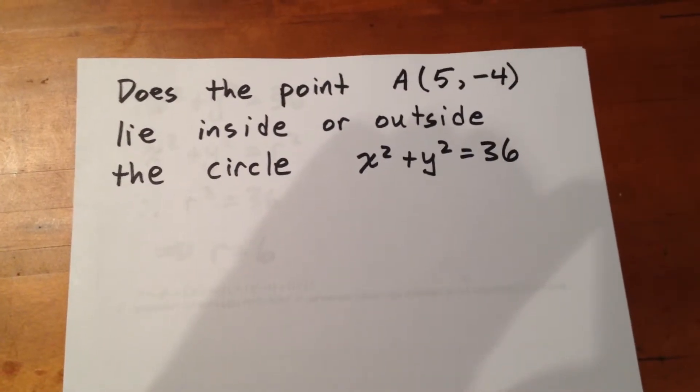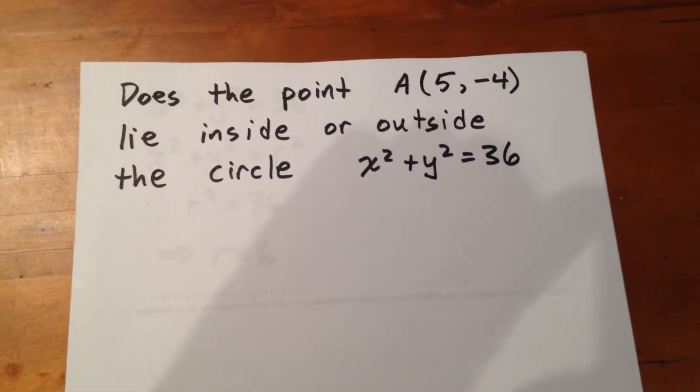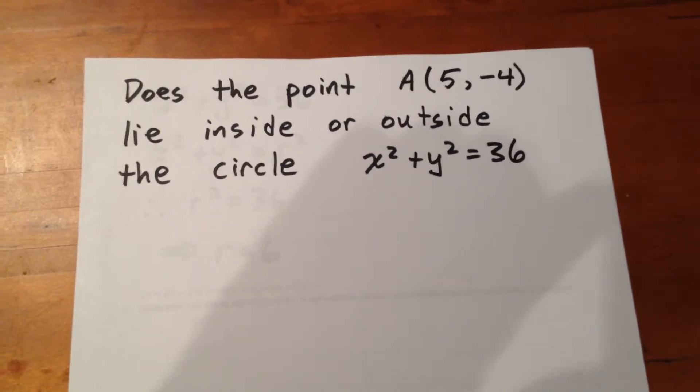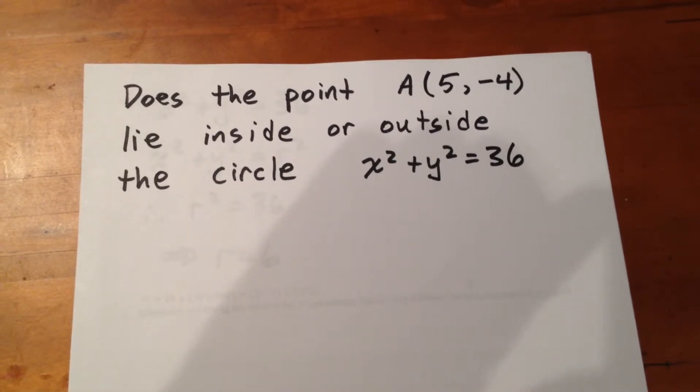In our next question, we want to determine whether the given point 5, negative 4, lies inside or outside of the circle x squared plus y squared equals 36.